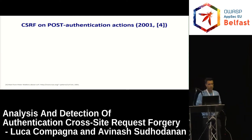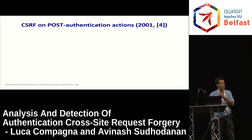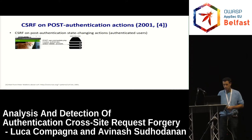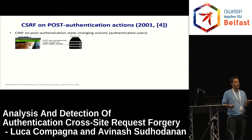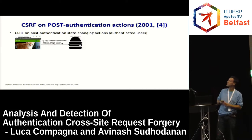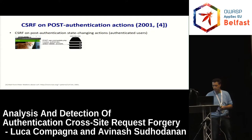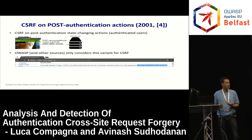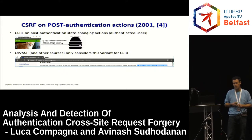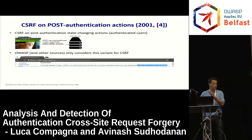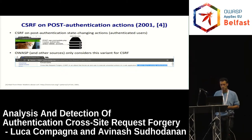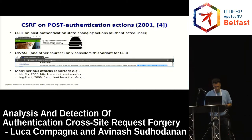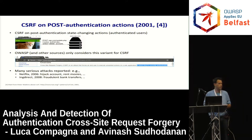Now let me dig into two variants of cross-site request forgery. The first is post-authentication actions. We just saw an example: a bank transfer happens when the user is already authenticated. You can have many others — delete account, any action that happens after the user authenticated fits the category we call post-authentication action. When you look at the web for a definition, cross-site request forgery mainly amounts to these post-authentication actions. I point this out because maybe it's one of the issues behind the number of vulnerabilities we discovered.